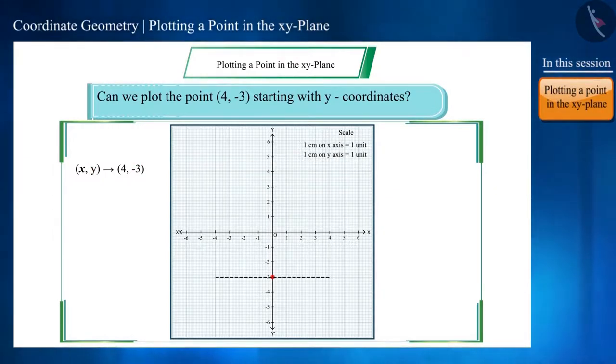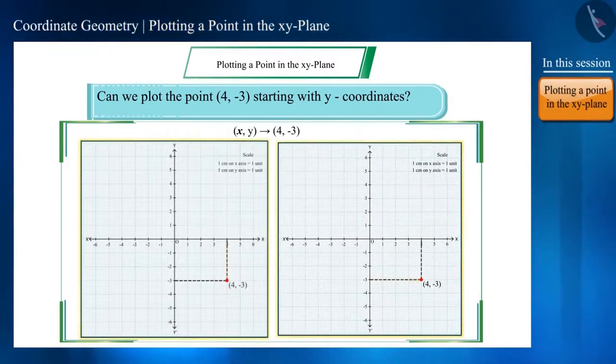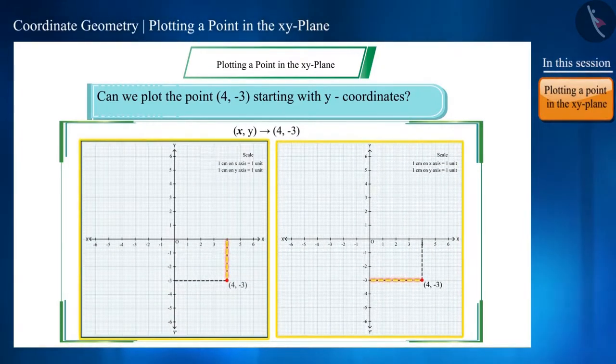But in which direction? What will that depend on? That will depend on the X coordinate which is 4. We will establish this point in the right or east direction by taking this line up to 4 units. And as you can see we got the same point using both the methods. Friends, thus you can plot a point by starting from any coordinate point.